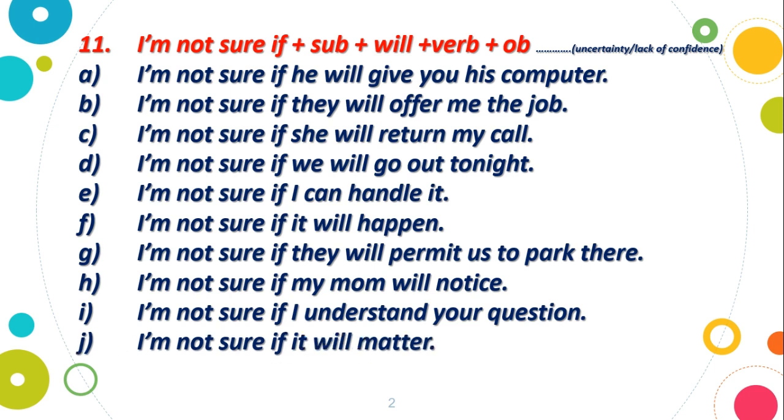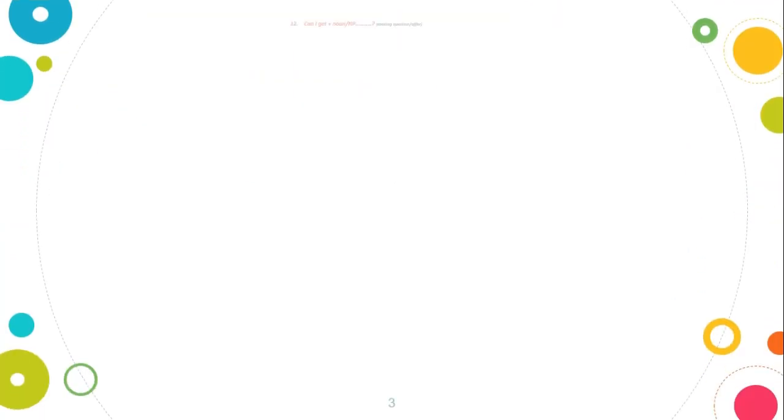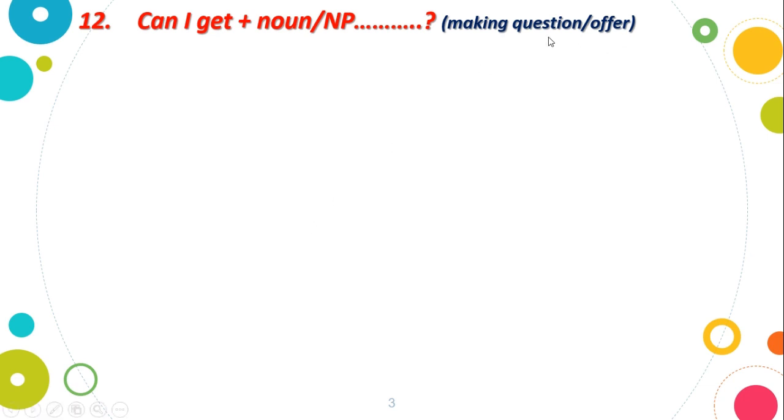Next structure number 12: Can I get. We use this when asking someone for something, offering something to someone, or requesting something.